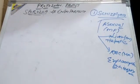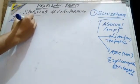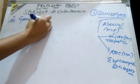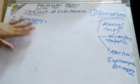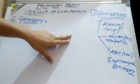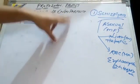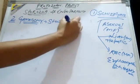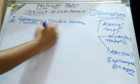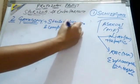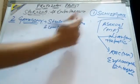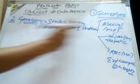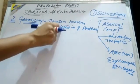The second phase of the life cycle is gamogony. Gamogony starts in humans but is completed in the female Anopheles mosquito. Please keep this in mind — it starts in humans but is completed in the female Anopheles.